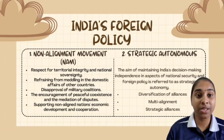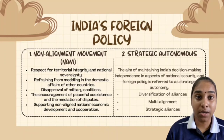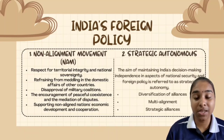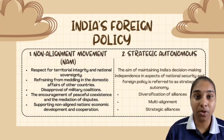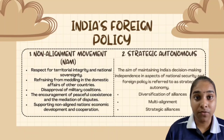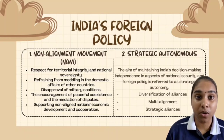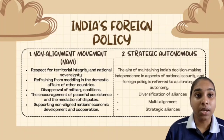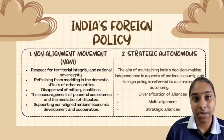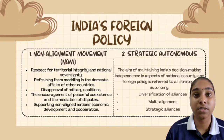The Non-Alignment Movement emerged during the Cold War era when countries were pressured to align with either the United States or the Soviet Union. India, under the leadership of Jawaharlal Nehru, championed the idea of non-alignment in making its foreign policy. The principles of non-alignment included maintaining independence, promoting peaceful coexistence, and avoiding military alliances. India advocated for the rights of smaller nations, supported decolonization efforts, and sought to create a world free from power-block dominance. Strategic autonomy refers to India's commitment to pursue its national interest without being dependent on any specific country or bloc.